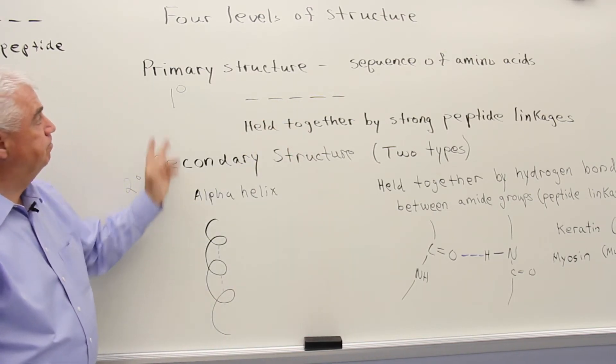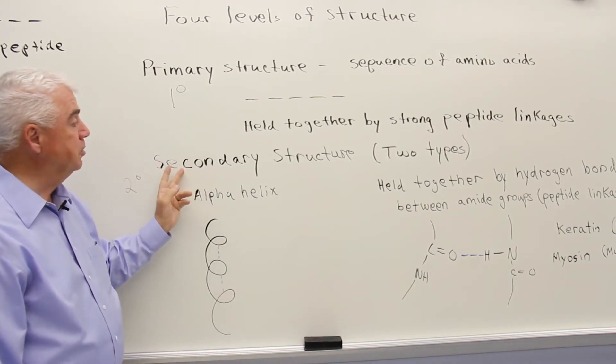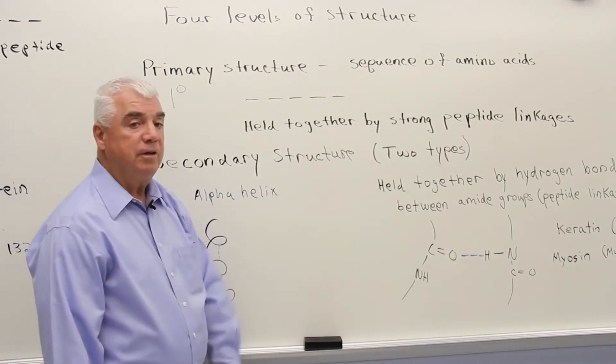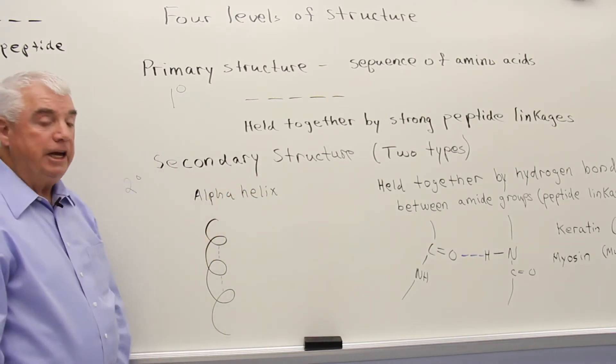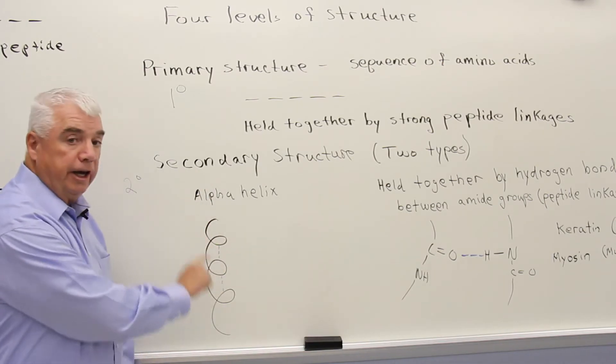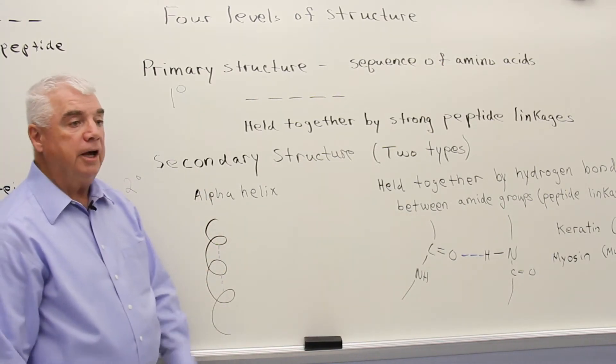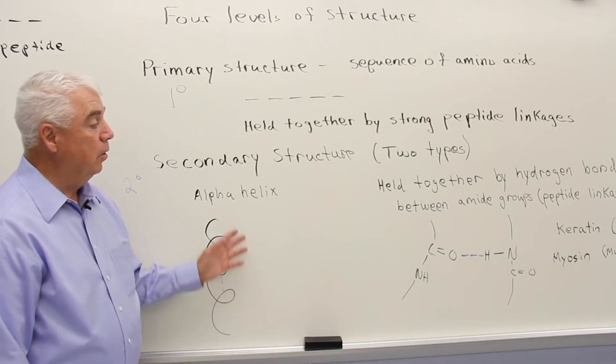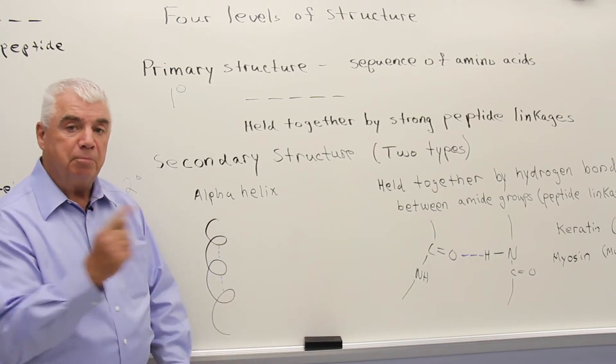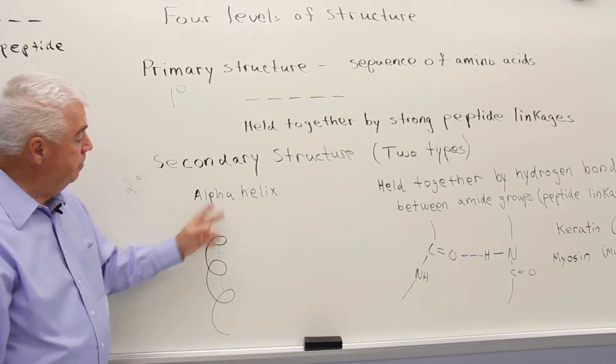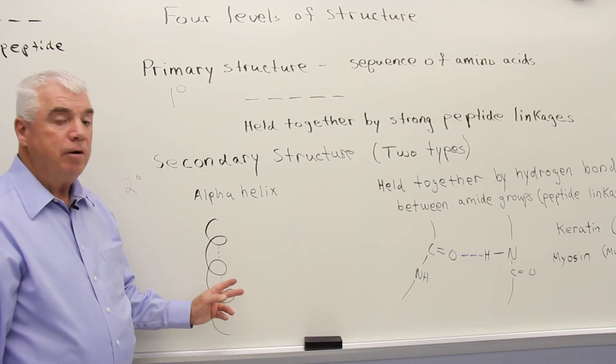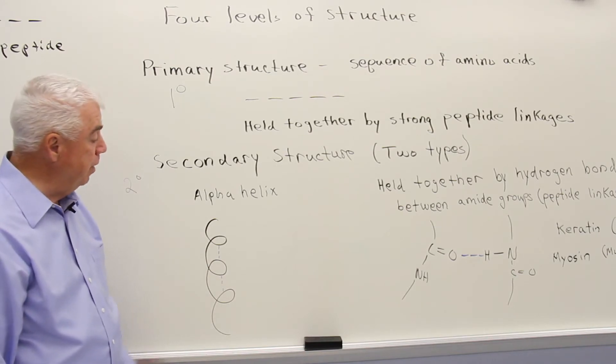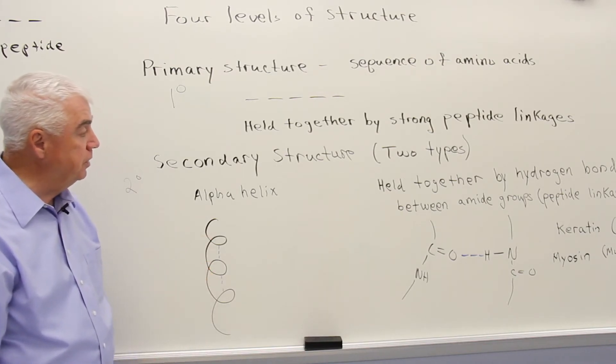The second level of structure, a little more complex now, is referred to as the secondary structure. There are two types that we'll look at. The first is called an alpha helix, sort of a coiling of the protein, almost like if you envision the cord of an old-fashioned telephone or an electric drill, how it sometimes wraps itself. And this coil is held together by hydrogen bonds.